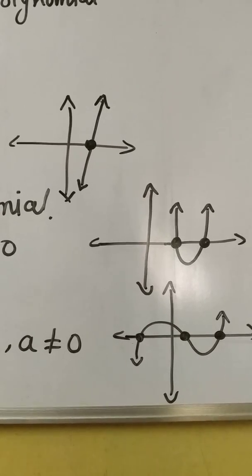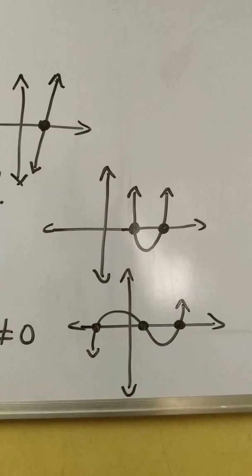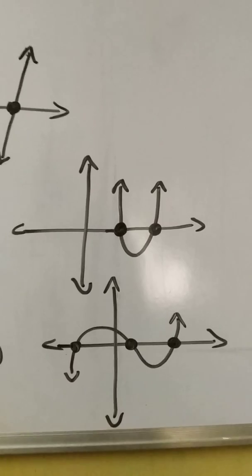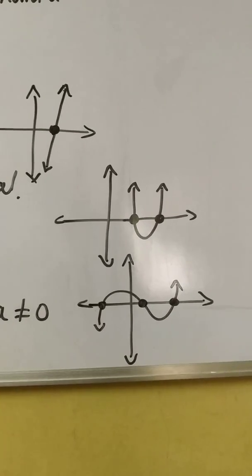In a quadratic polynomial, the graph is called parabola, it touches x-axis maximum two times and the third one is cubic polynomial, it touches x-axis maximum three times.